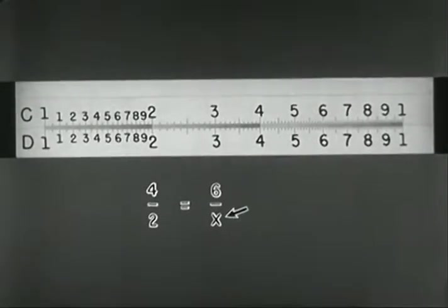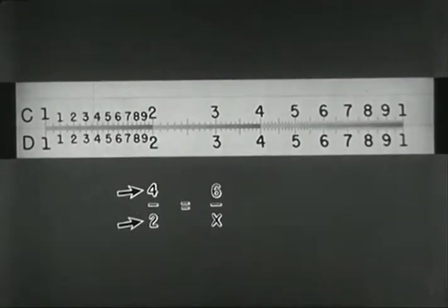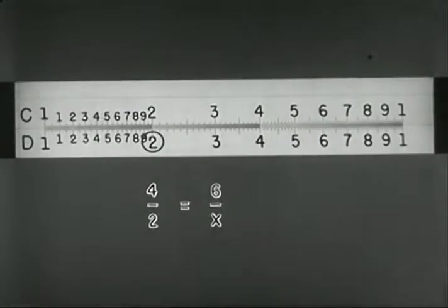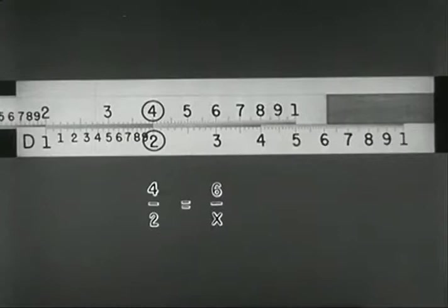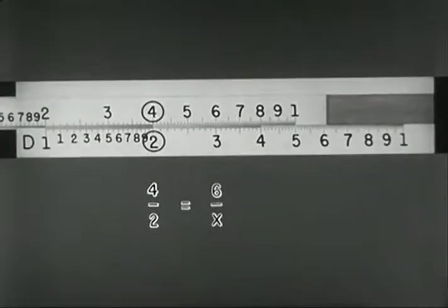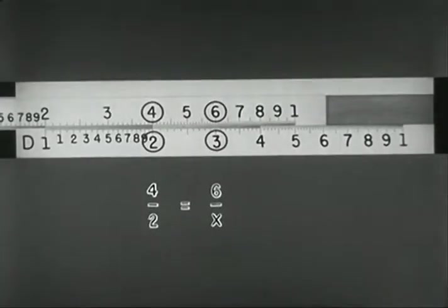To find x, first set the rule to match the known quantities above and below the line. In this case, 4 over 2. Find 2 on D, and to it slide 4 on C. Find 6 on C. Opposite 6 read x as 3 on D.